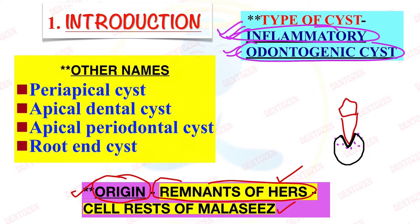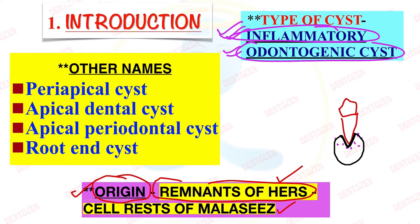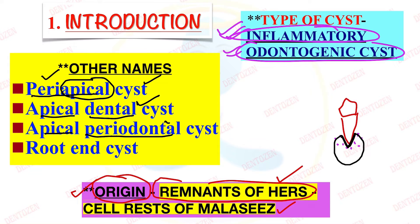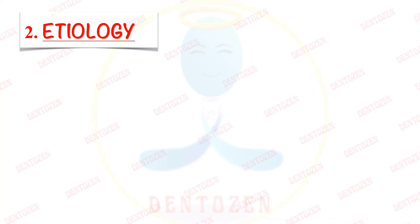On getting an inflammatory stimulus, they will form a cyst around the apex of the root of the tooth. That is why this cyst is also known as periapical cyst — 'peri' means around, 'apical' is the apex of the root. It is also known as apical dental cyst, apical periodontal cyst, or radent cyst because it is located at the end of the root.